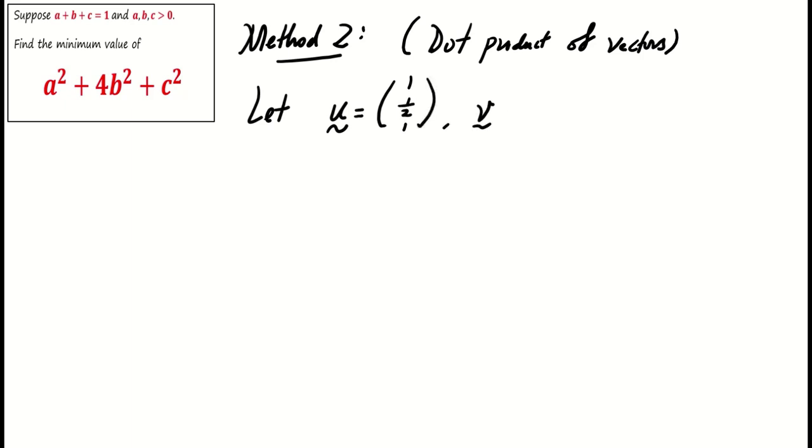Now for method 2. Here, we use the concept of vector dot product, a fundamental operation in vector algebra. We define vectors u as 1, half, 1, and v as a, 2b, c.